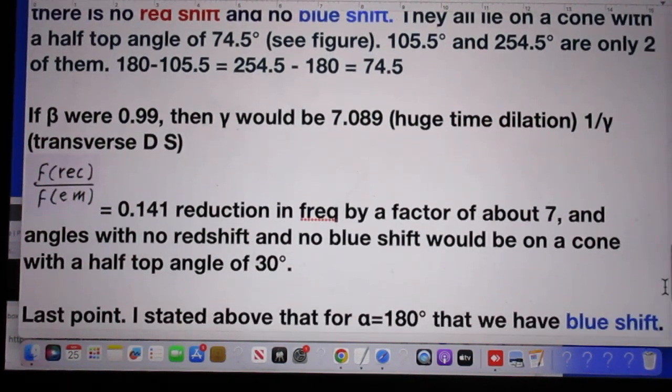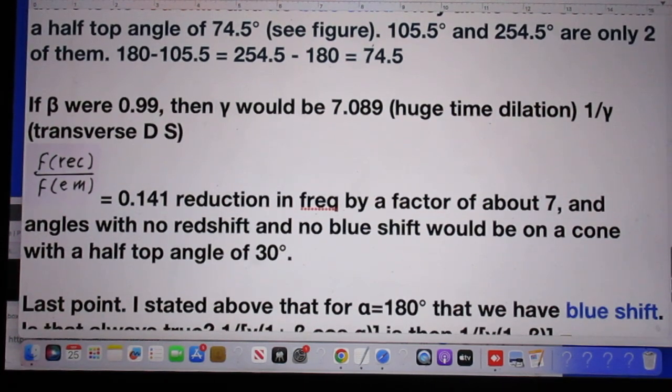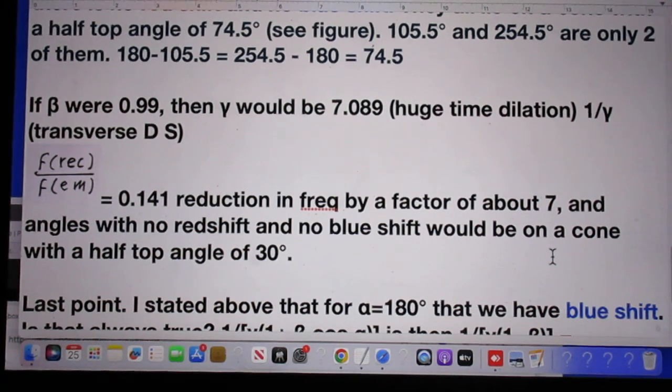If beta were 0.99, so the galaxy would move relative to us with a speed of 99% of the speed of light, then gamma would be 7.089. Huge time dilation. So 1 over gamma, which is the transverse Doppler shift, would be 0.141. It means the frequency, the reduction in the frequency emitted by the galaxy to be received by us, that reduction is a factor of 7. And angles with no redshift and no blueshift would be on a cone with a half-top angle of 30 degrees.